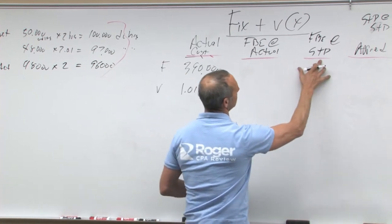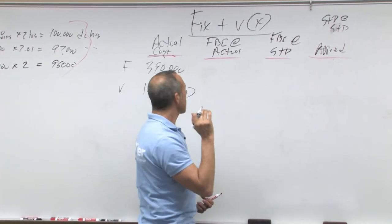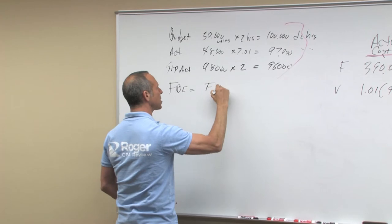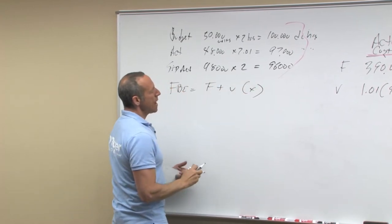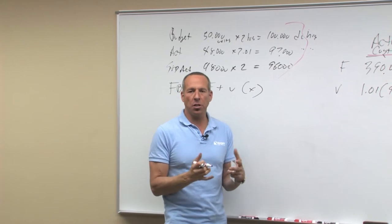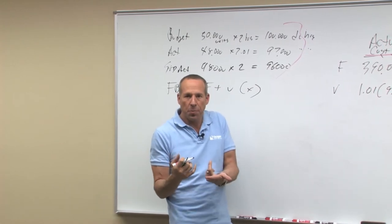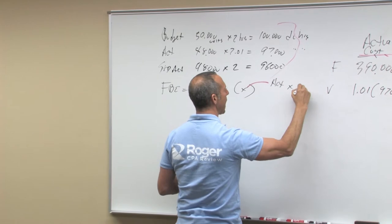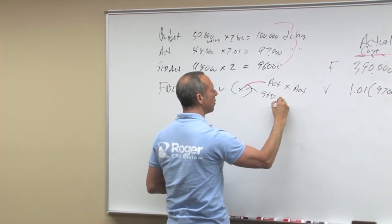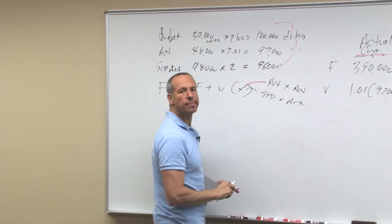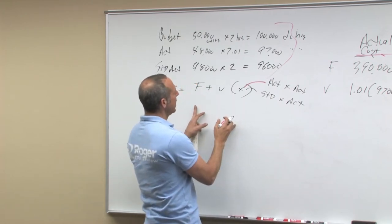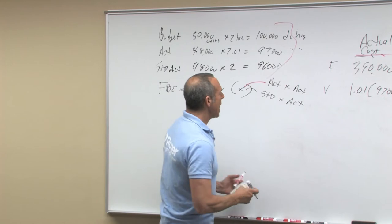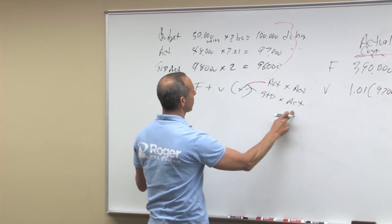Now, flexible budget. Let's look at our flexible budget equation. Our flexible budget equation is: equals fixed plus variable times X. Within the flexible budget equation, fixed is fixed and variable is fixed, but it's the X that's going to change. The X could either be actual at actual or standard allowed for actual. It's going to be your fixed based on your budget and your variable based on your budget, and then it's either going to be actual at actual or standard allowed for actual.